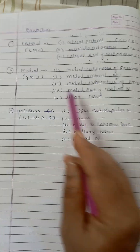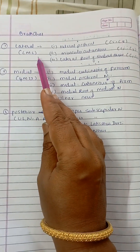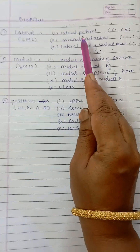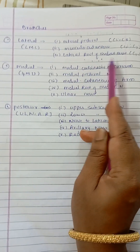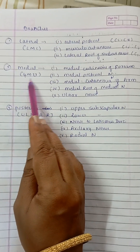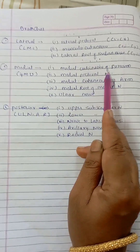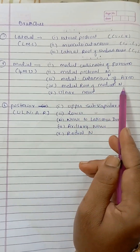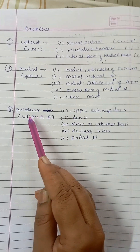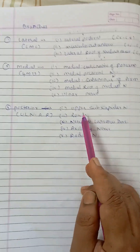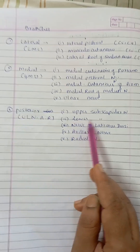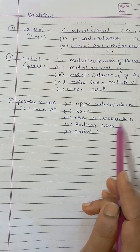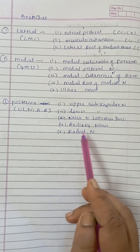For branches: the lateral cord gives LML — lateral pectoral nerve, musculocutaneous nerve, lateral root of median nerve. The medial cord gives 4MU — medial cutaneous nerve of arm, medial cutaneous nerve of forearm, medial pectoral nerve, medial root of median nerve, and ulnar nerve. The posterior cord gives ULNER — upper subscapular, lower subscapular, nerve to latissimus dorsi, axillary nerve, and radial nerve.